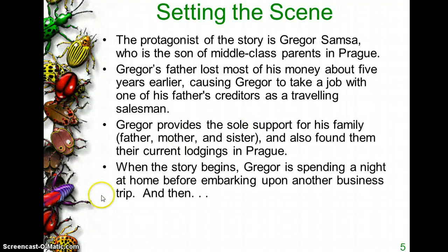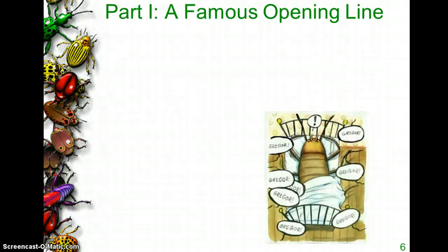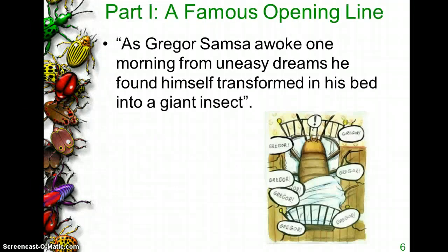So when the story begins, Gregor is spending the night at home — he's getting ready to go on another business trip. He's at home in bed, and the next morning he's supposed to get up. Then the opening line of the story is: 'As Gregor Samsa awoke one morning from uneasy dreams, he found himself transformed in his bed into a giant insect.'